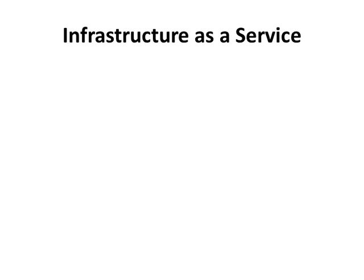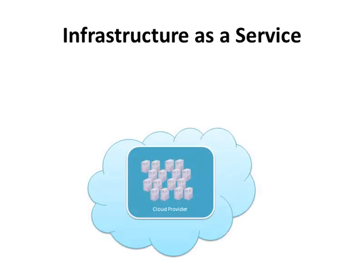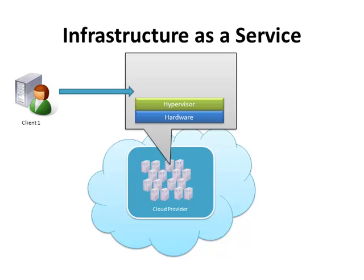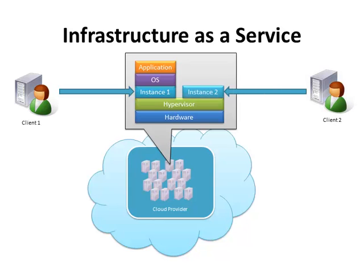In Infrastructure-as-a-Service, a cloud provider rents out computing resources to clients. Typically, this is done by a piece of software called a hypervisor, which allows multiple instances of operating systems to run simultaneously on a single machine. The cloud provider provisions instances for clients and gives them control to choose their own operating system and install their own software. In this manner, multiple clients can share the same physical hardware, and the sharing is controlled by the hypervisor.